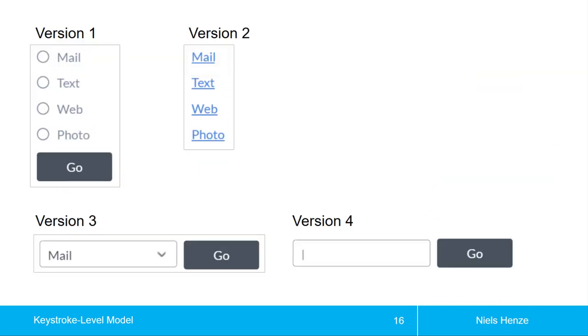Let's look at a comparison. What you see here are four versions of the same action that a user wants to perform. Version 1 has radio buttons, you select the radio button then press go. The task for all of these interfaces is select photo. Version 2 is much simpler - there are four links, and you just click on photo. Version 3 has a combo box, you press on the small arrow so the list opens, then click on photo, then click on go. For version 4, you have to type photo and then press go.